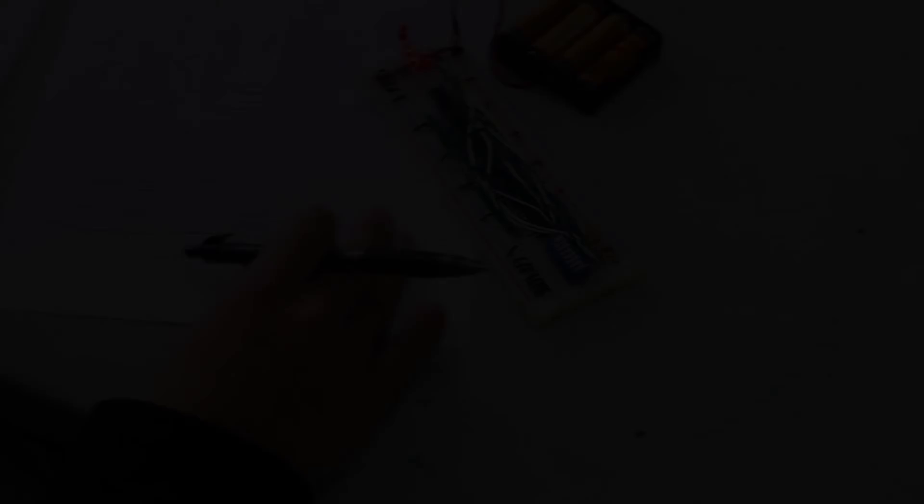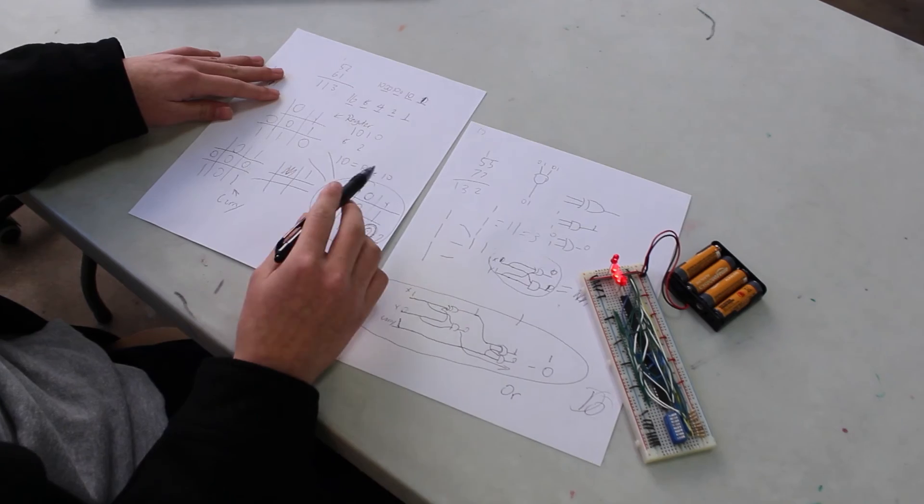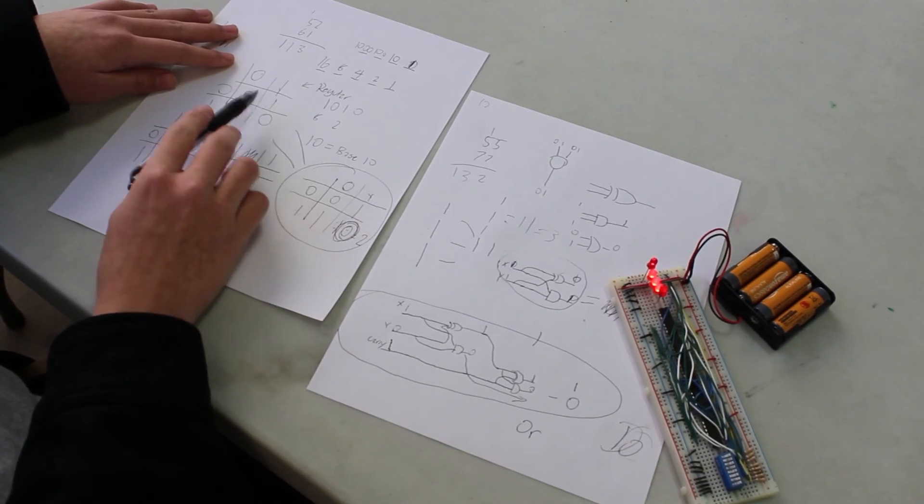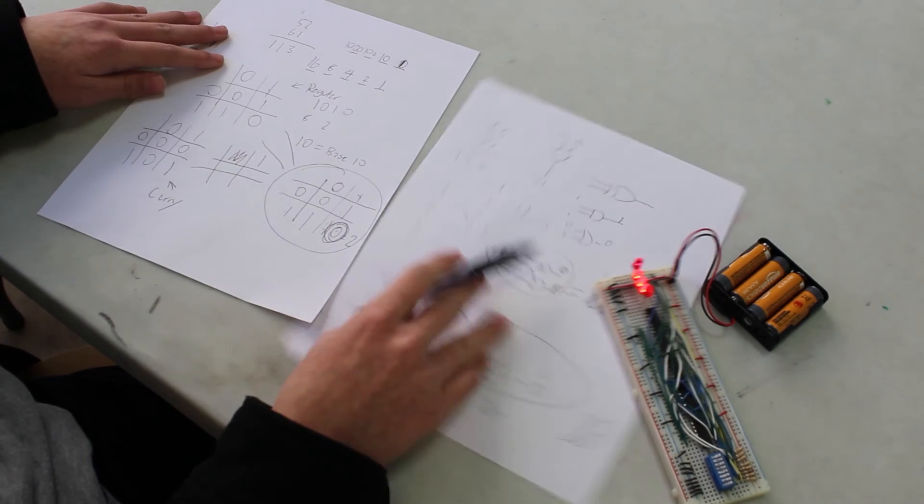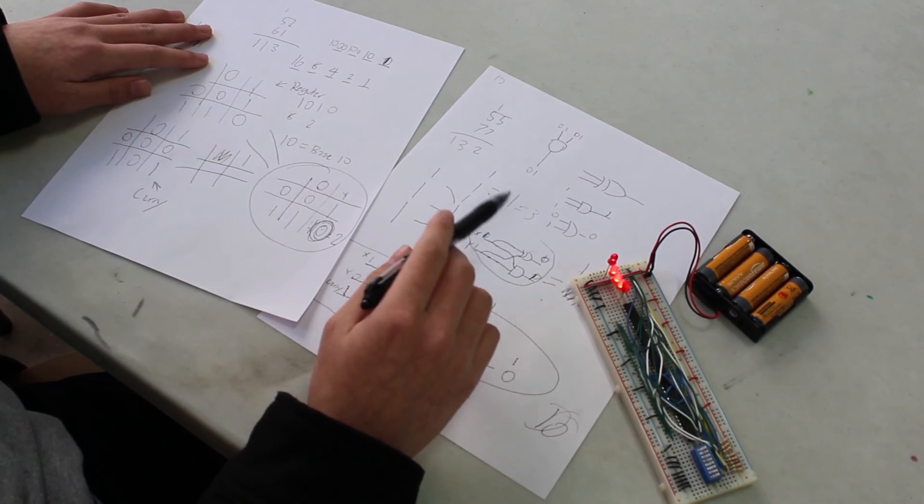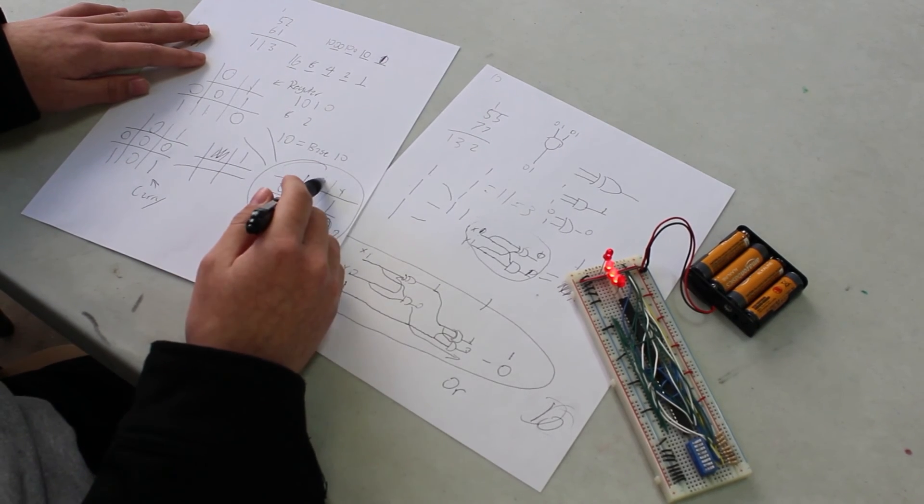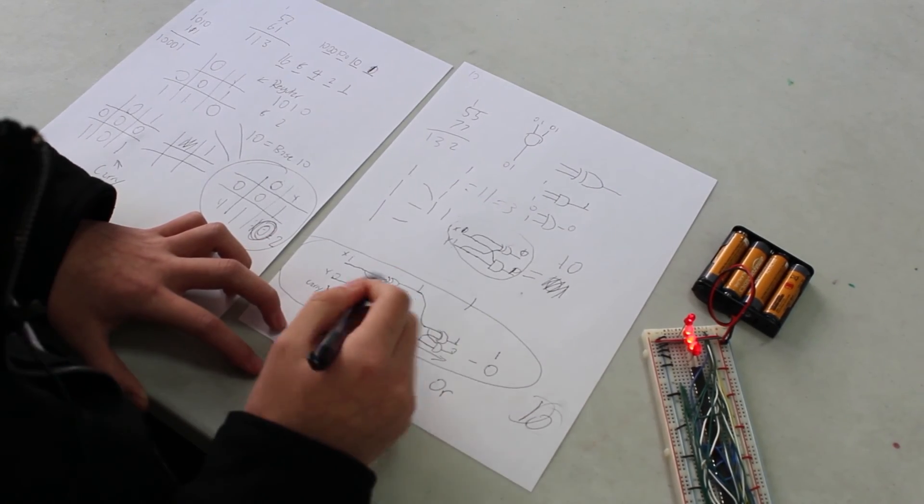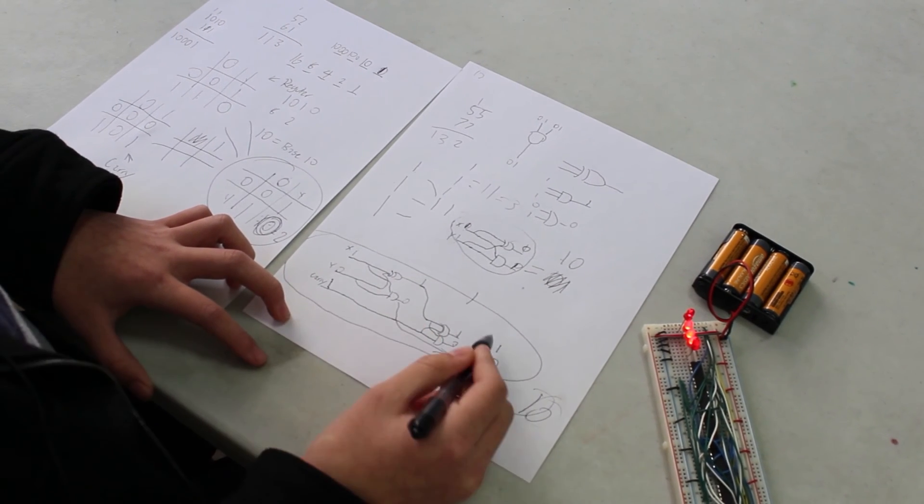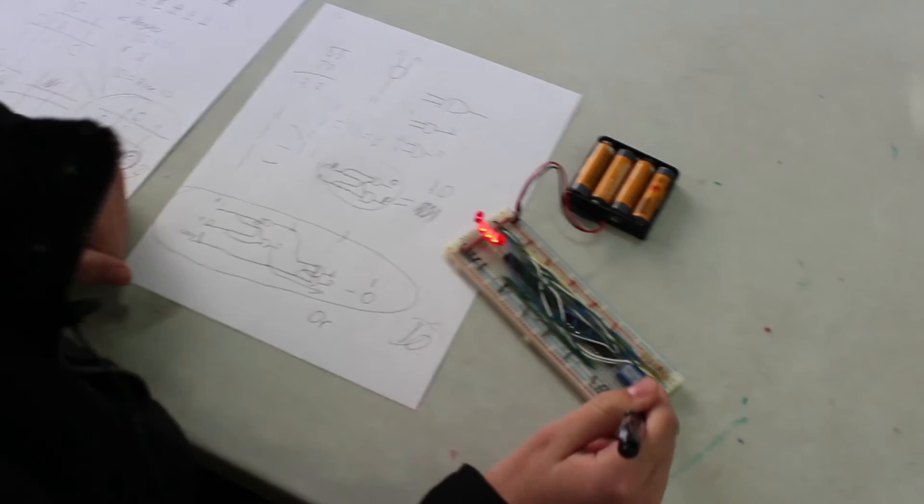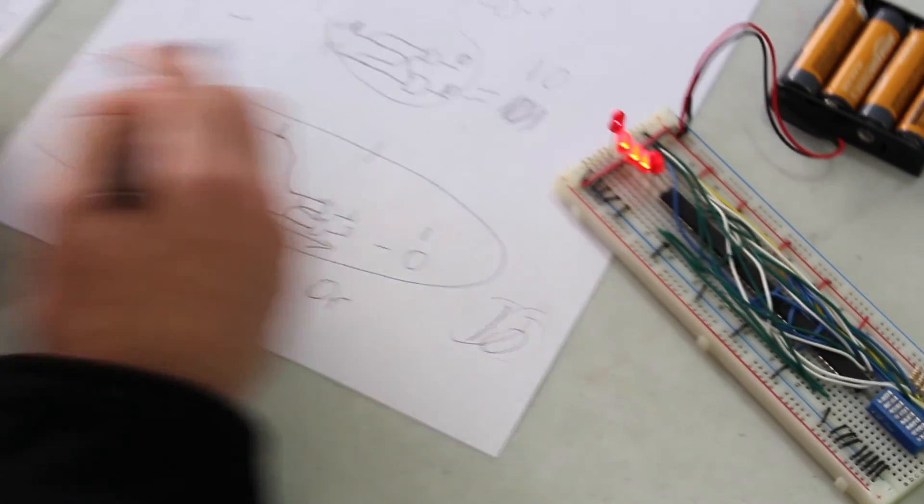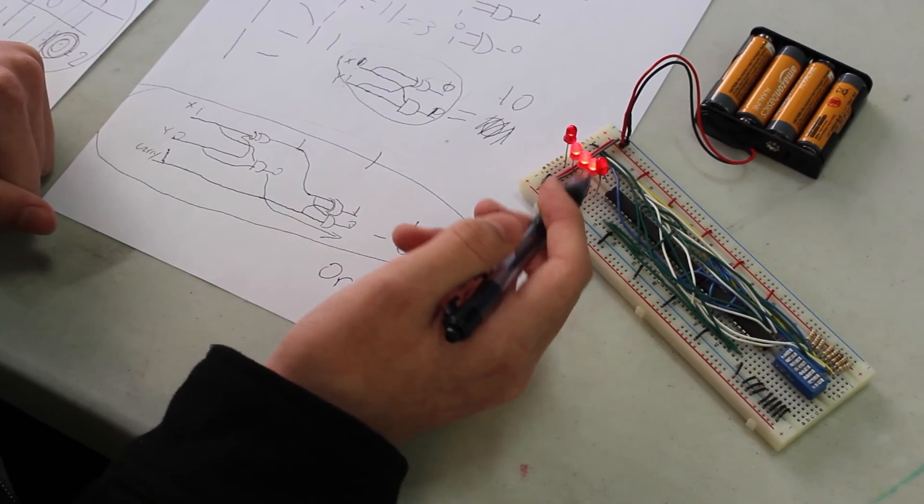For binary, this is the addition table. We have 0 plus 1 is 1, 1 plus 0 is 1, 1 plus 1 is 1, 0. So we split this into two tables. For this, we use an XOR gate. For this, we use an AND gate. So we put these together. This doesn't have a carry for the previous number. So we take this full adder. This has an input for the carry. We take this four digit binary number and this four digit binary number. And we put each digit through a full adder. So this adds all the digits together in the binary number, and it outputs to these LEDs.